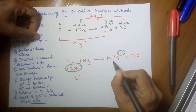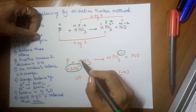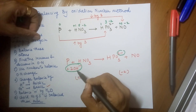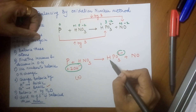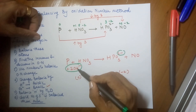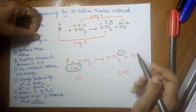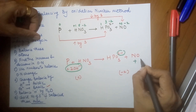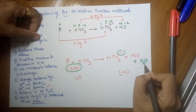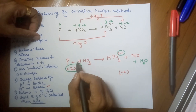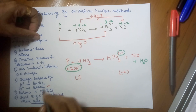Now balance the hydrogen atoms using water molecules. On the left side we have one hydrogen (from HNO3) plus two (from the two OH⁻), making three hydrogens. On the right side we have one hydrogen so far. We need two more, so we add one water molecule, which provides two hydrogens, giving three hydrogens on the right side as well. Hydrogen is now balanced.